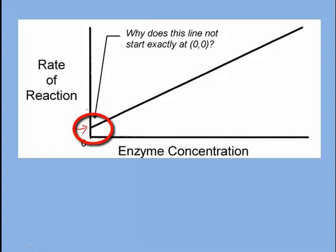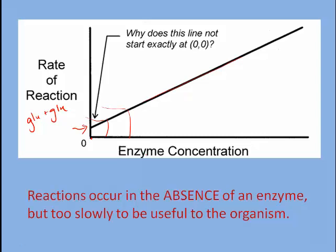The answer has to do with the fact that reactions do occur in the absence of enzymes. So if you had zero enzyme, and you were doing a reaction between glucose and glucose, you would still get some product, maltose, but it would be very, very little in a very long time period. So the rate of reaction would be very slow. As you add enzyme, provided you have enough substrate, you are going to get a faster and faster rate of reaction. So the reactions occur in the absence of an enzyme, but too slowly to be useful to an organism.